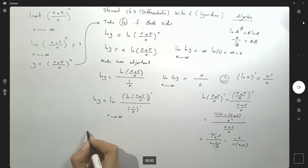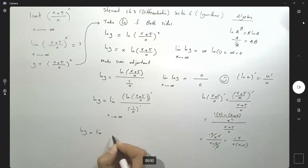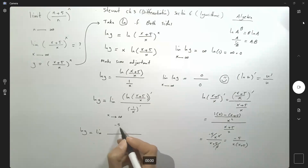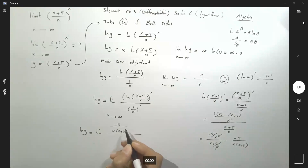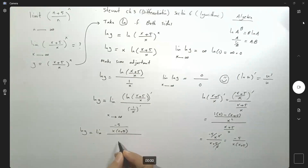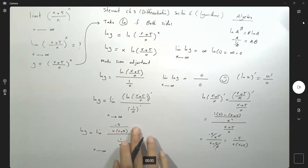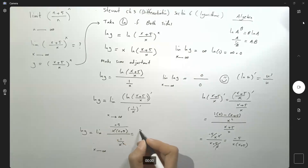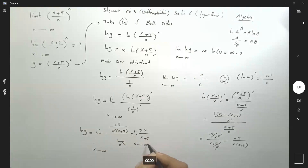So let me write this down. ln of y becomes the limit of: the numerator is negative 5 over x(x + 5), and the denominator is the derivative of 1/x, which is negative 1 over x squared, as x approaches infinity. Simplifying — cancel one x, and the negatives cancel to give positive — you get 5x divided by (x + 5). Taking the limit as x approaches infinity gives 5 divided by 1, which is 5.